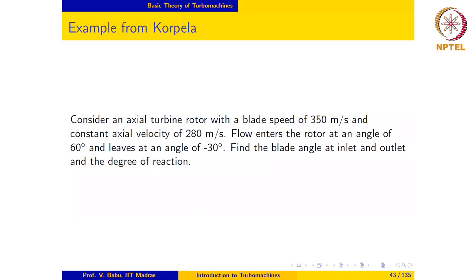Let us now look at the next example. The problem statement reads: consider an axial turbine rotor with a blade speed of 350 meters per second and constant axial velocity of 280 meters per second. Flow enters the rotor at an angle of 60 degrees and leaves at an angle of minus 30 degrees. Find the blade angle at inlet and outlet and the degree of reaction. The first step, as we did in the previous example, is to construct the velocity triangle using the given information.